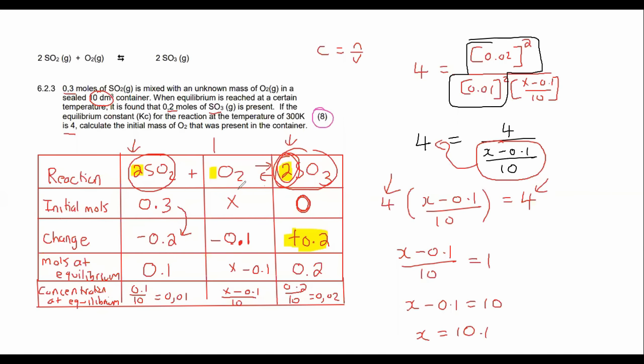And then I'm going to solve and I'm going to end up with 10.1. Now that is not your answer. That is the initial moles of oxygen, but they said calculate the initial mass. But that's okay because now what we can do is we can just use our n = m/M formula.